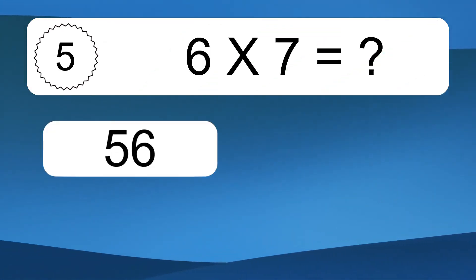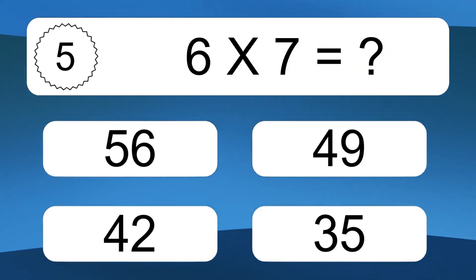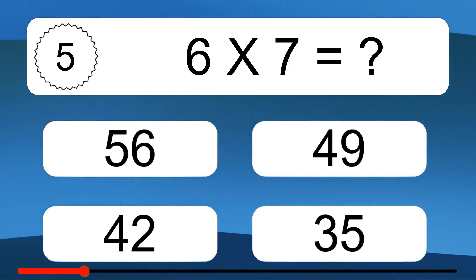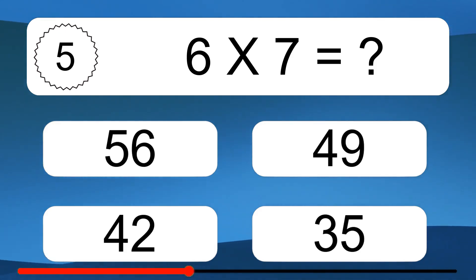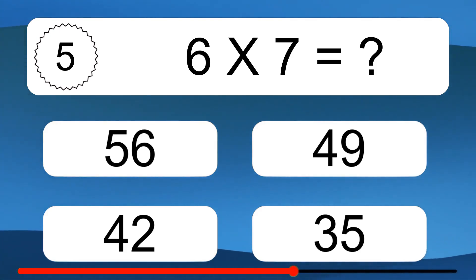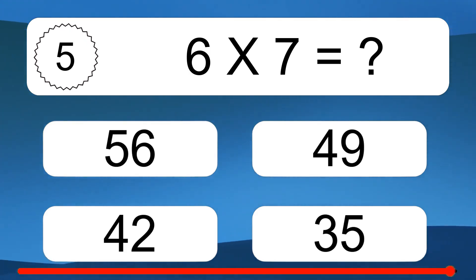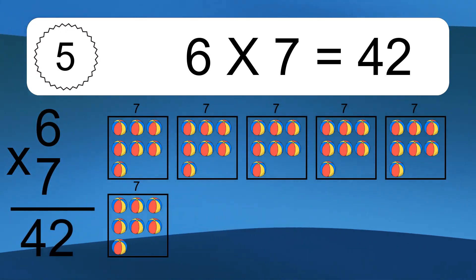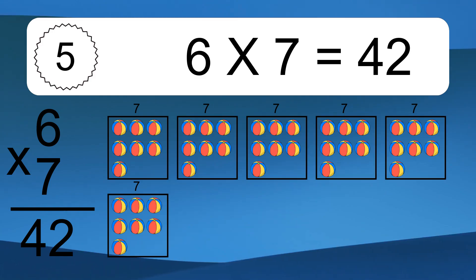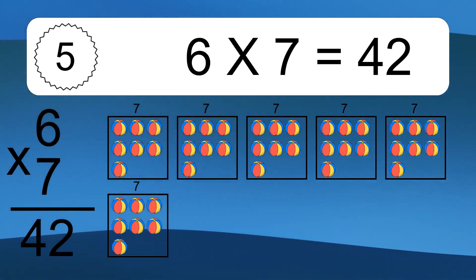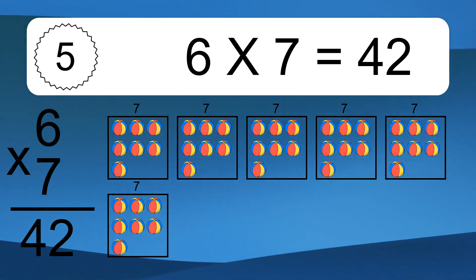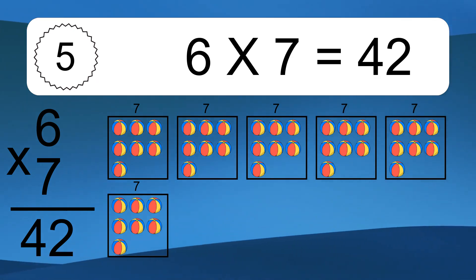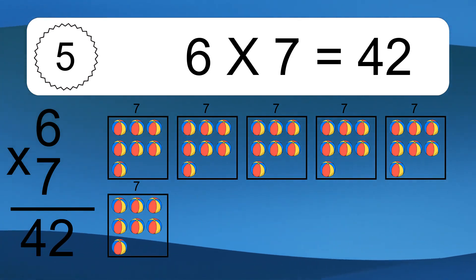6 times 7 equals what? 6 times 7 equals 42. We have 6 boxes, and each box has 7 colorful balls inside. If you count all the balls in all the boxes together, you will have 6 times 7 balls. This equals 42 balls.